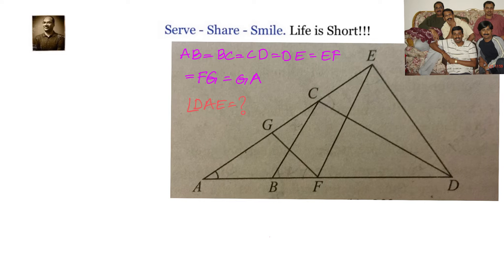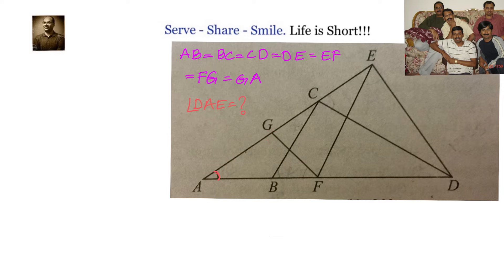The concepts we need to use to solve this problem are the fundamentals of triangles: all three angles of a triangle add up to 180 degrees; if two sides of a triangle are equal, then the opposite angles are equal; and the exterior angle of a triangle is equal to the sum of the two opposite interior angles.